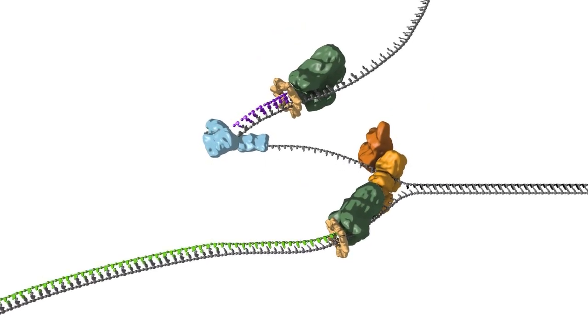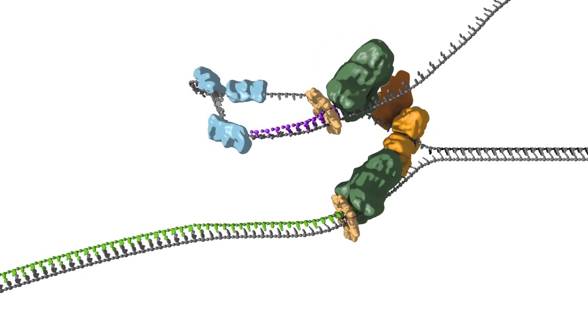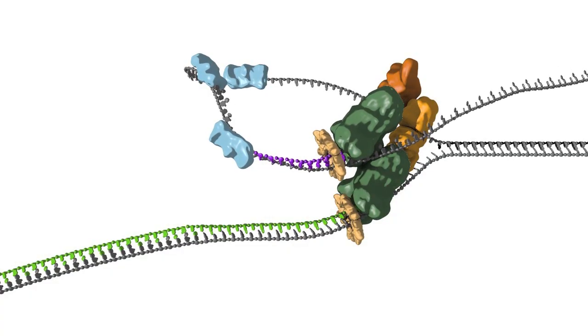Once this primer is made, the lagging strand polymerase on the replisome, having completed synthesis of the previous lagging strand, then re-engages with the 3' end of the new primer, forming a new loop on the lagging strand.